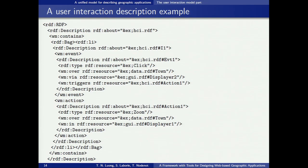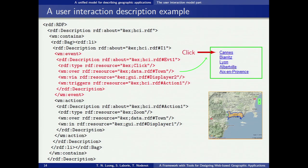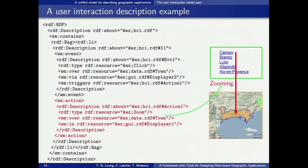This is an RDF XML sample corresponding to the interaction model part. A user interaction named I1 is defined in the file. This interaction contains an event and an action. This description explains that if a user clicks on any annotation in displayer 2, displayer 1 will zoom in on that annotation.